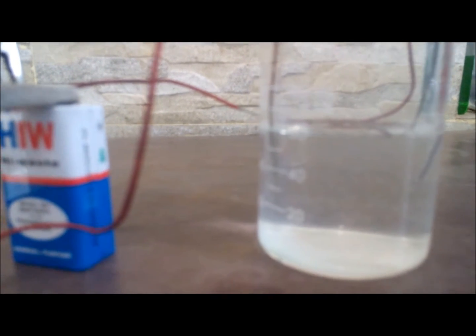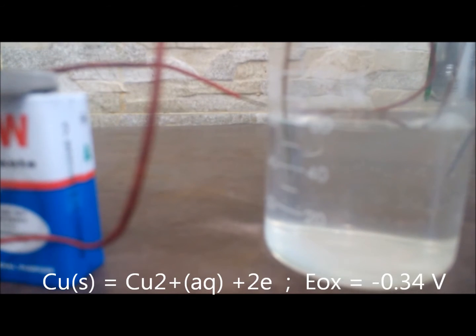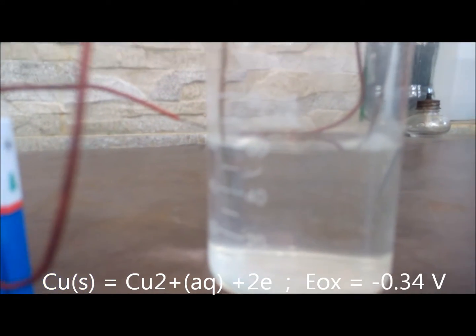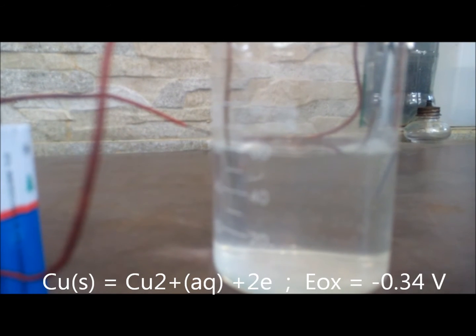But out here chlorine gas does not seem to get released because we have copper electrodes. Now here copper is actually getting oxidized to cuprous or cupric ion.